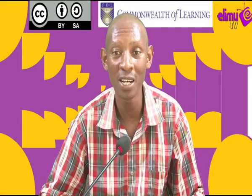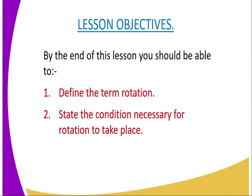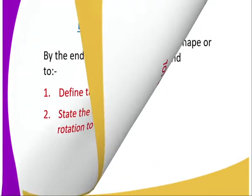In today's lesson, we are on lesson 21, and the topic is rotation, and the subtopic is rotations. The lesson objective: by the end of this lesson, you should be able to, number one, define the term rotation, and number two, state the conditions necessary for rotation to take place.